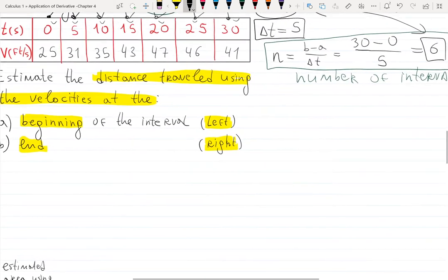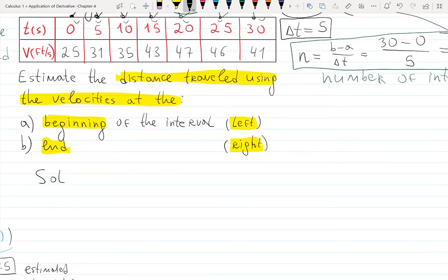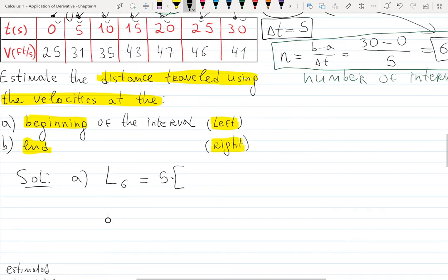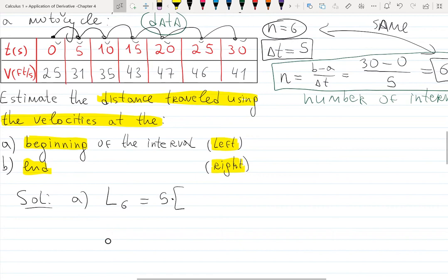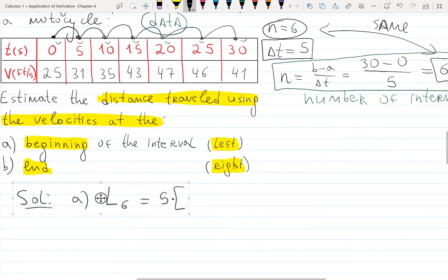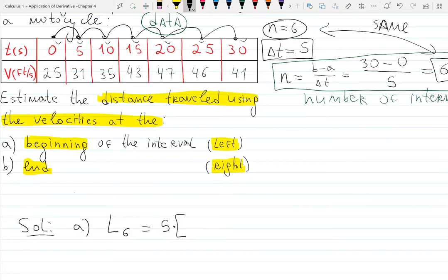For solution (a) using left endpoints, I will call it L sub six. Five will be factored out because five is the same. Let me remind you—we had this in the previous video. Distance can be found as what kind of product? Yes, velocity times time, which is v times t.